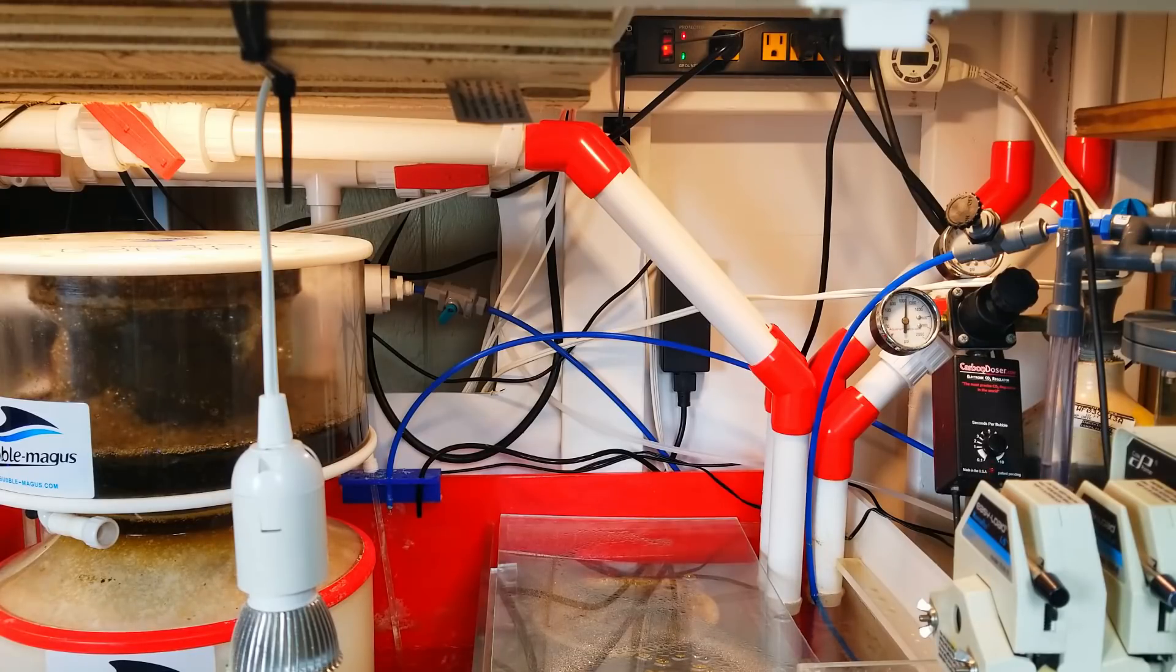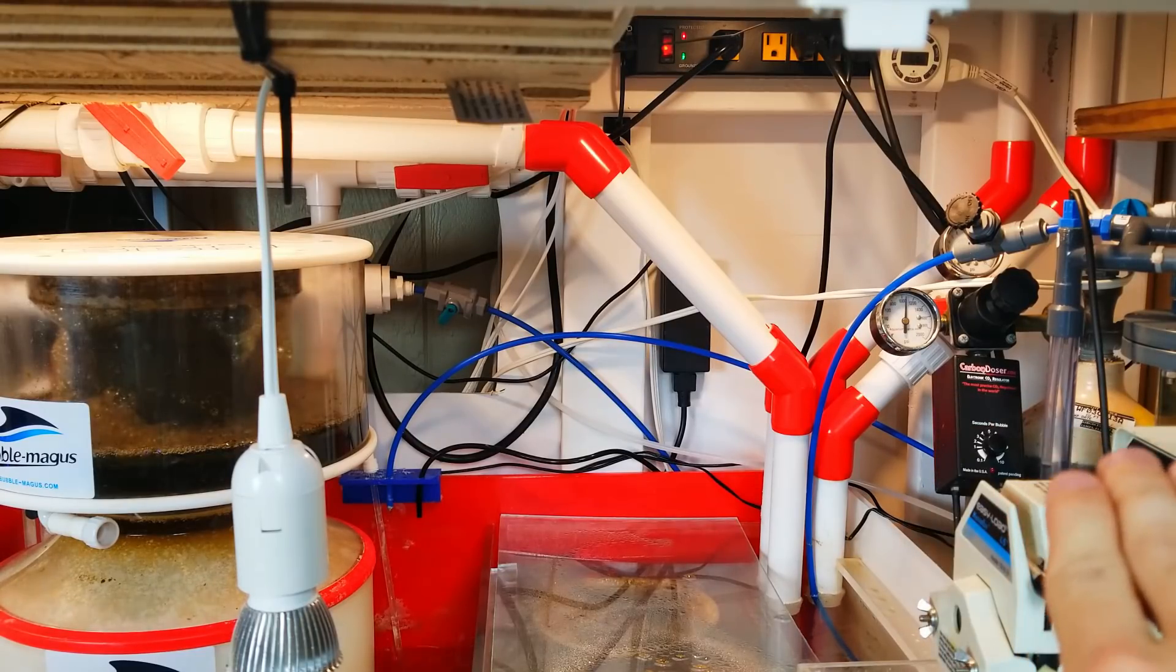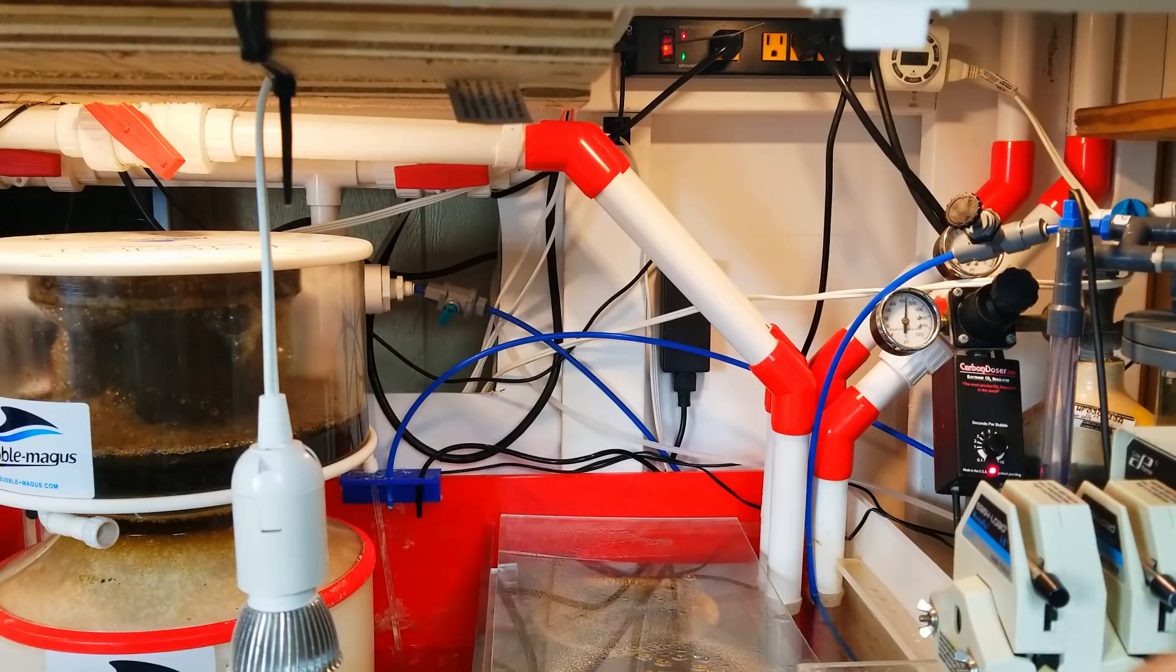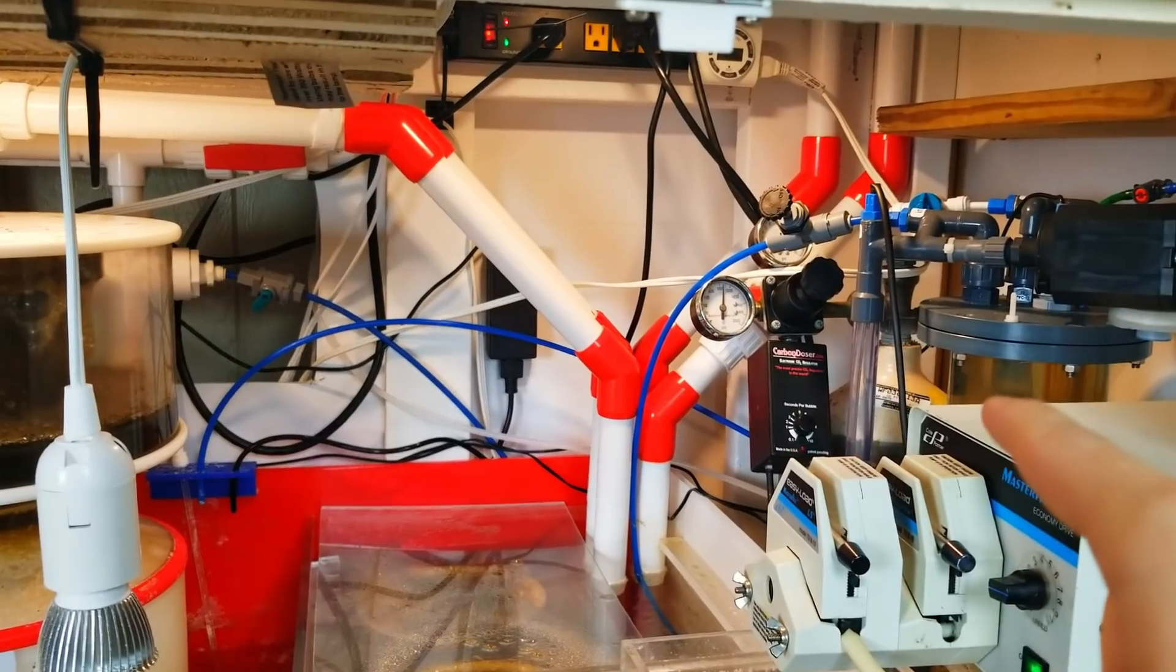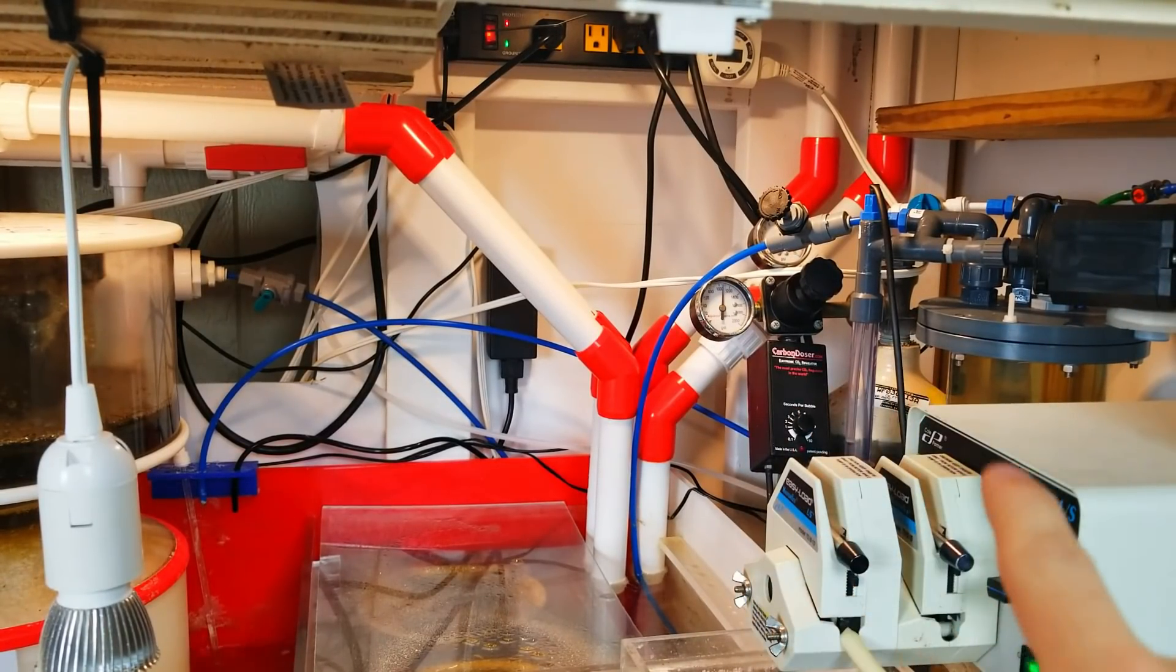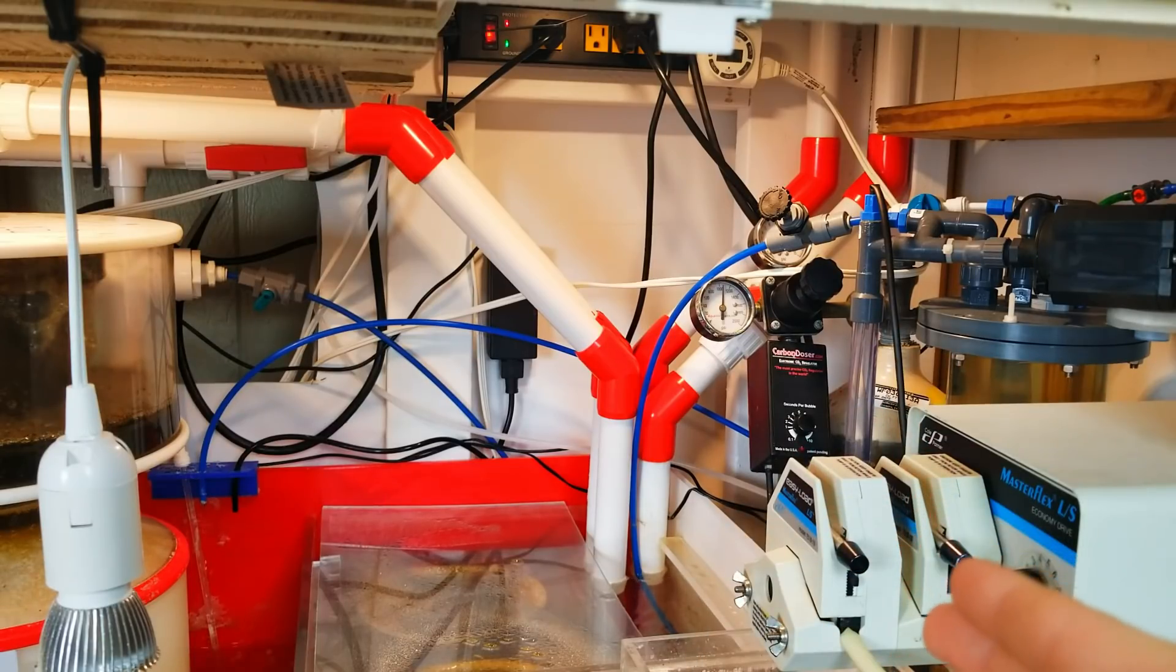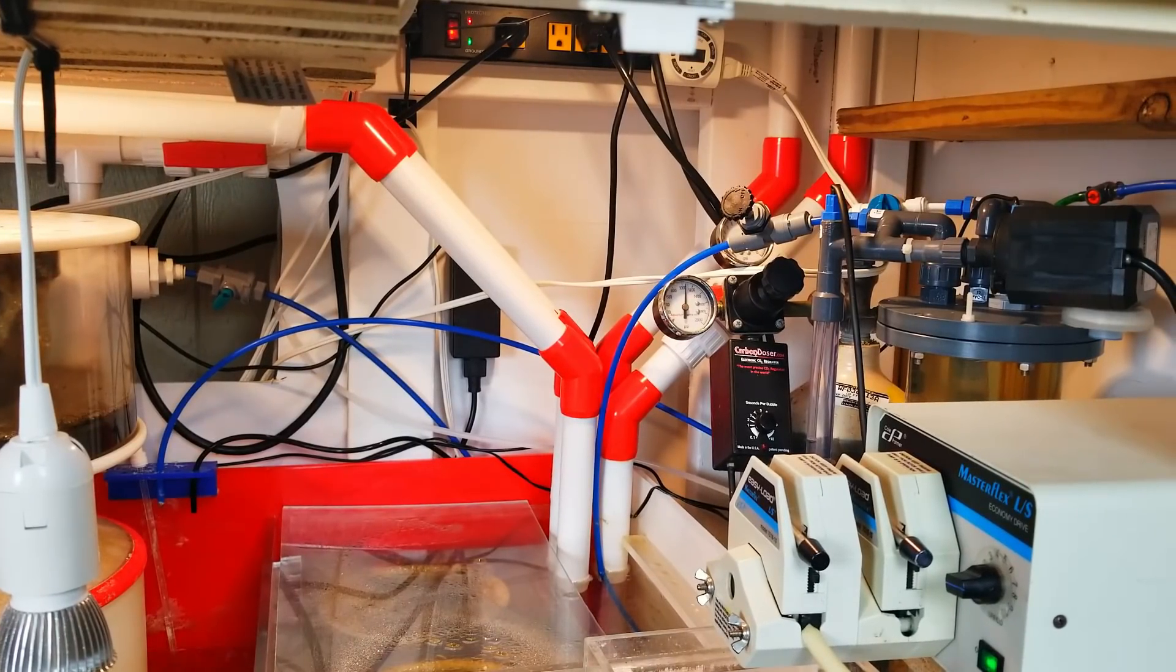So everything in this is running precisely, exactly the same. The carbon doser over here, the regulator and solenoid, is pumping out exactly the same amount of CO2 every second, which is then in turn going into the calcium reactor. The peristaltic pump is pumping the exact, and pulling I should say, the exact amount of water through the calcium reactor every minute. And so everything is super stable, which allows you to really control the amount of calcium and alkalinity that is being put back into your tank.